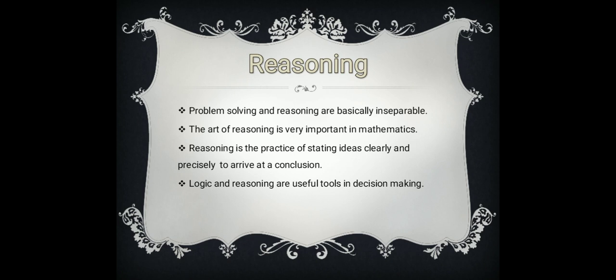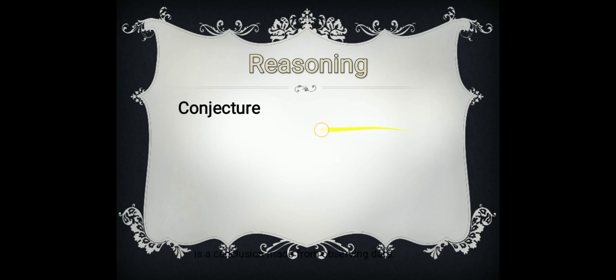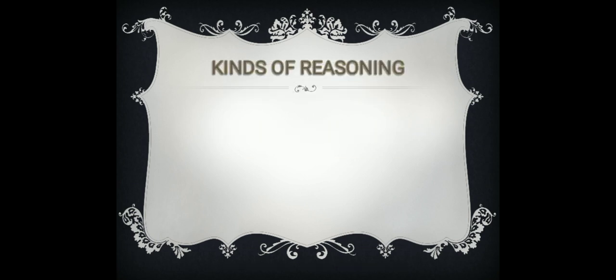In the aspect of reasoning, we have the term conjecture. A conjecture is a conclusion made from observing data — meaning when you observe and analyze data and arrive at a conclusion, that conclusion is called a conjecture. As humans, we are rational beings and we behave in different ways, so we also have different kinds of reasoning. Your reasoning may differ from one another, and there are several types of reasoning listed here.